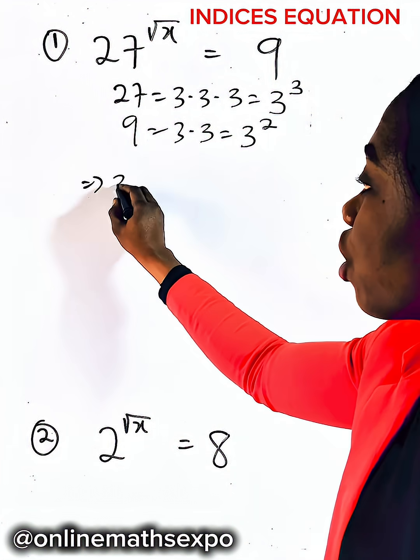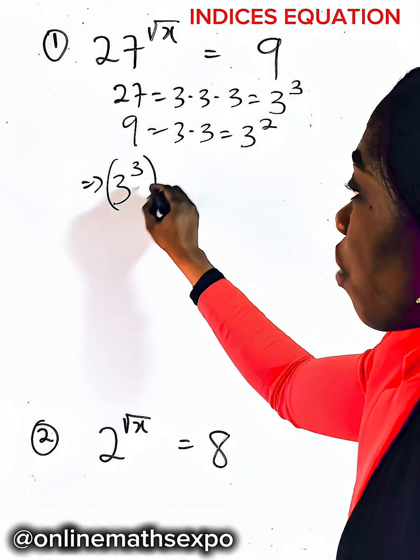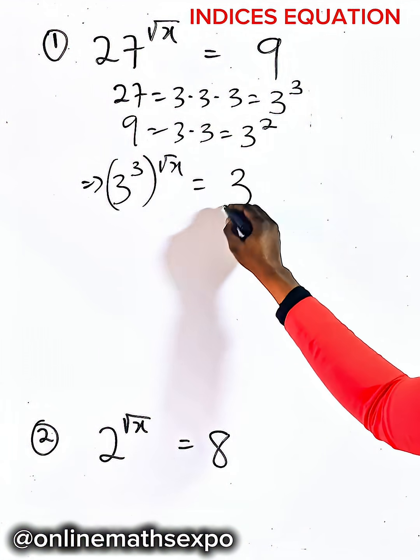So for this we are going to have 3 cubed raised to the power of root x is equal to 3 squared.